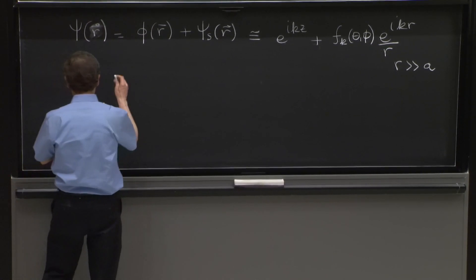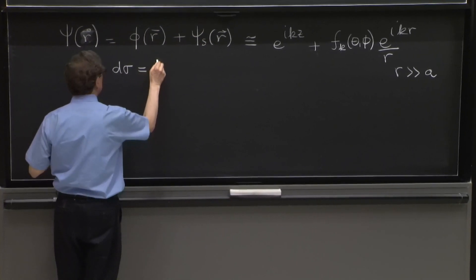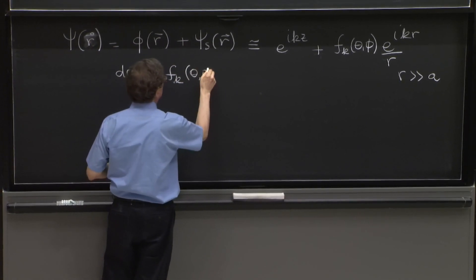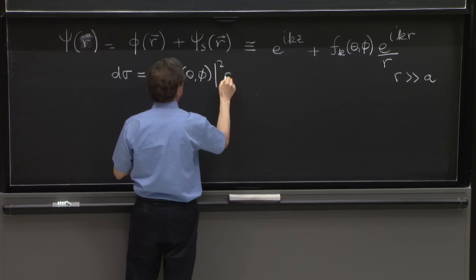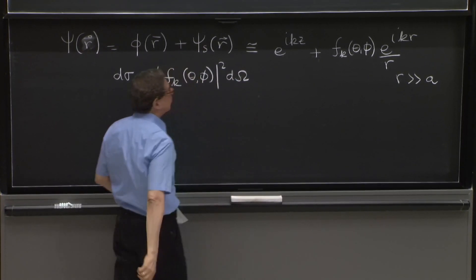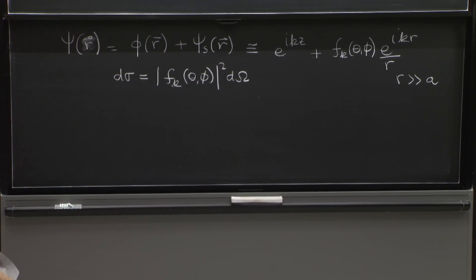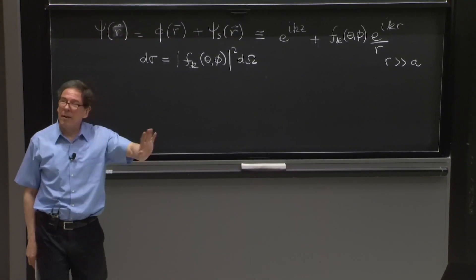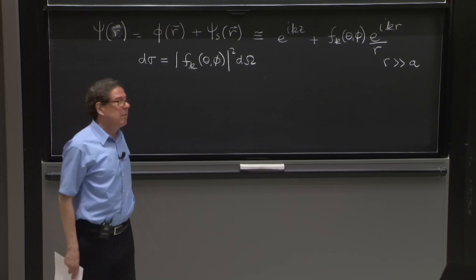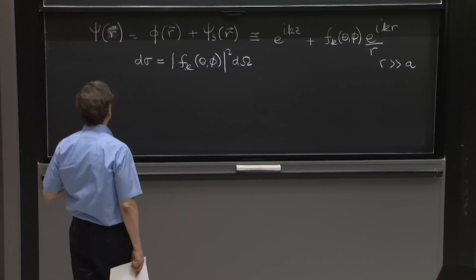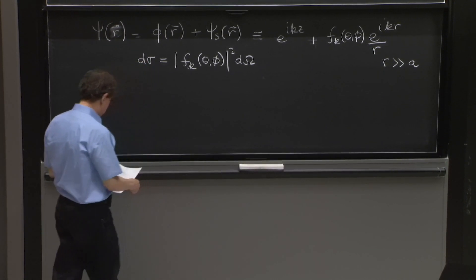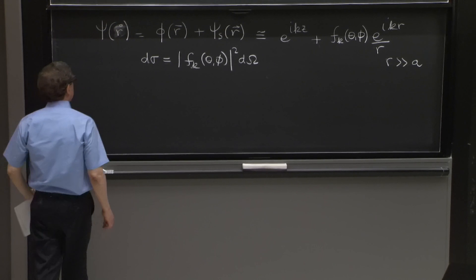Then we also showed that the differential cross-section was, in fact, given by this function F. So this function F is really what we're after. And if we know F, we know the differential cross-section, which is something we measure experimentally. We're scattering particles and we detect them, and the differential cross-section tells us about our ability and the number of particles that each detector picks up.